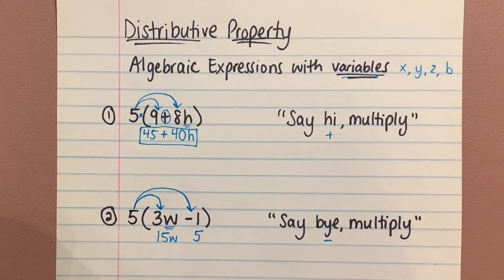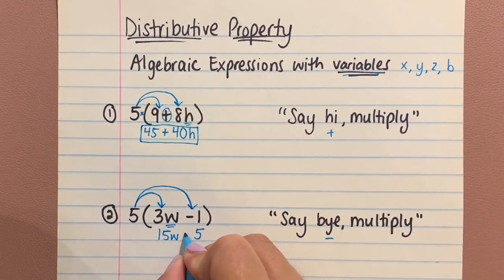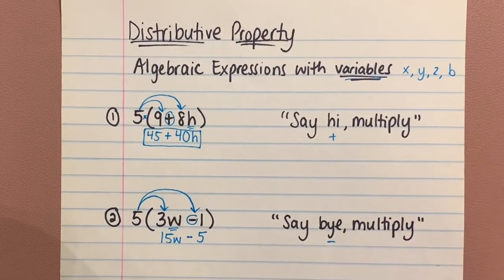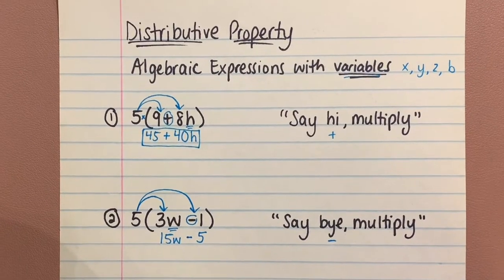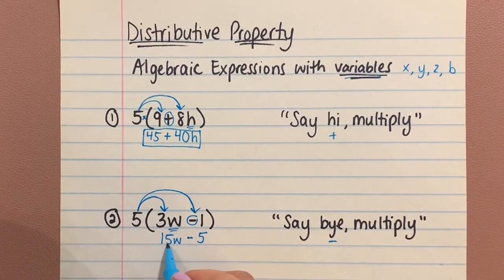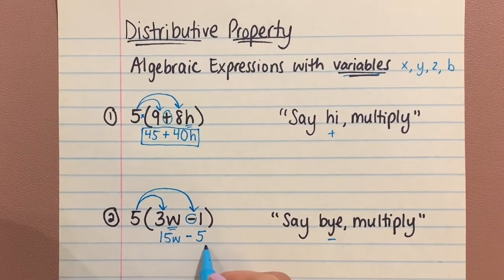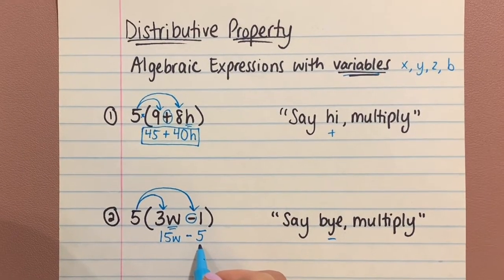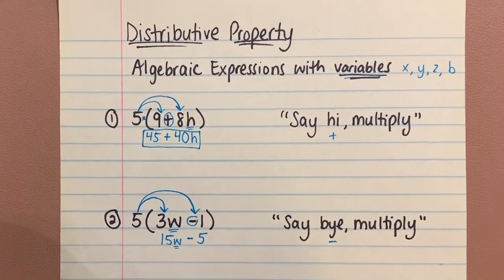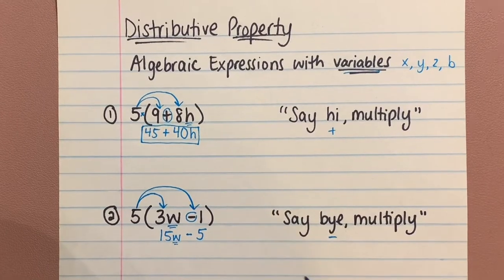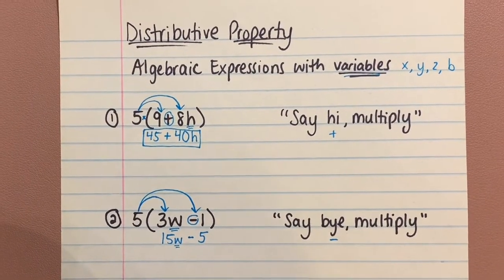Five times one is five. And since it's 'bye' with a minus sign, we're going to keep that right there. The same as number one, you're not going to combine the 15W and the five. You're not going to subtract them because this one has the little W attached and the five does not.